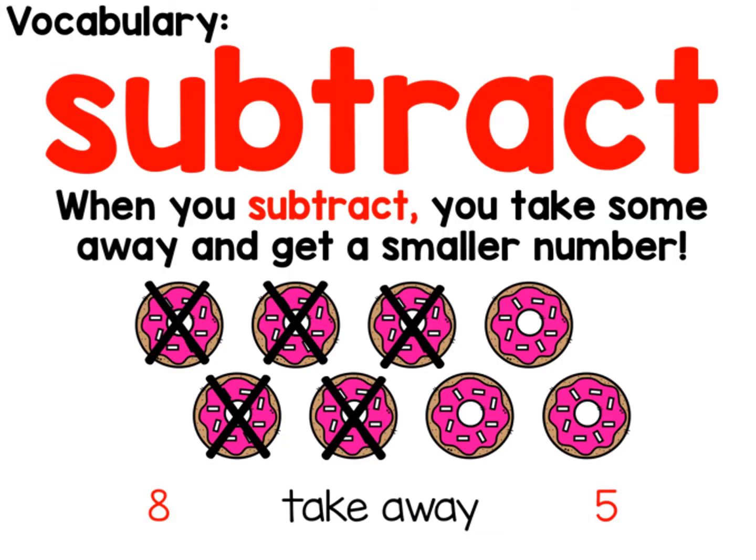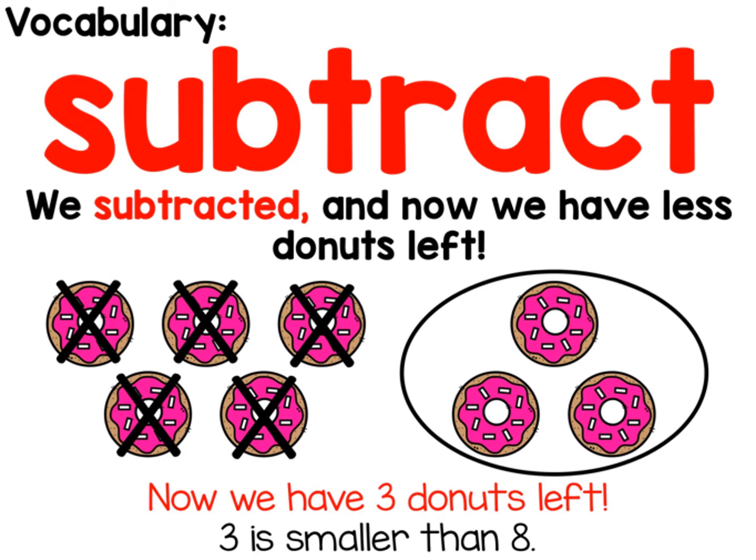So the first important word is subtract. When you subtract, you take some away and you get a smaller number. We started with eight donuts, take away five. So that means we are subtracting. We subtracted and now we have less donuts left. Now we have three donuts left. Three is smaller than eight.